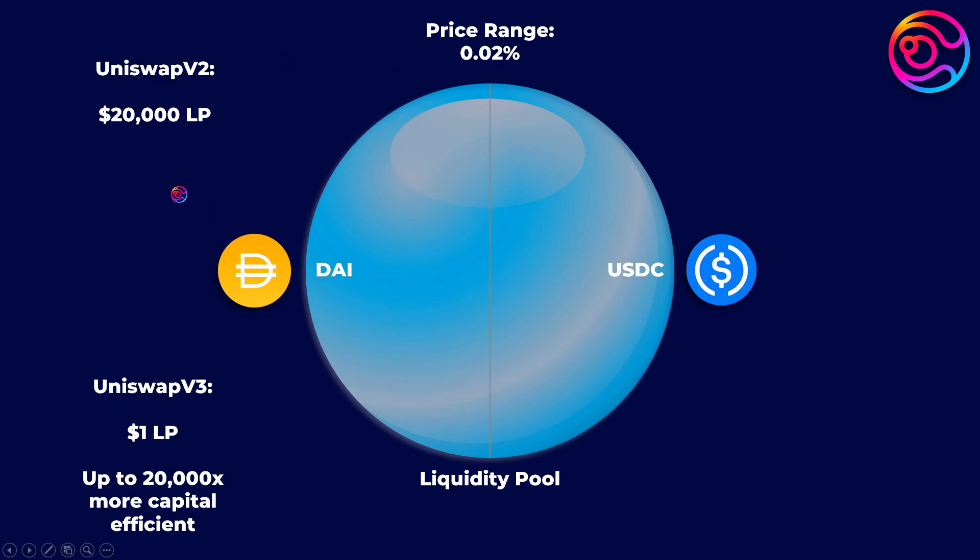At Uniswap V3's highest capability, this can increase to 20,000 times in ranges as granular as 0.02%. As you can see, when providing liquidity within the active price range, liquidity providers stand to earn significantly more from trading fees compared to Uniswap V2.